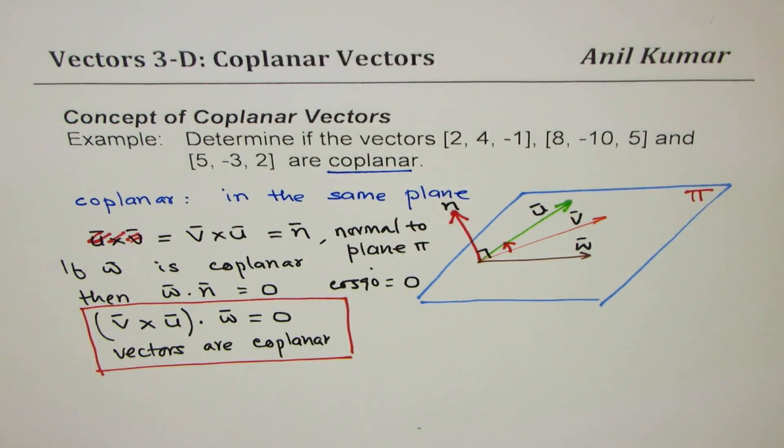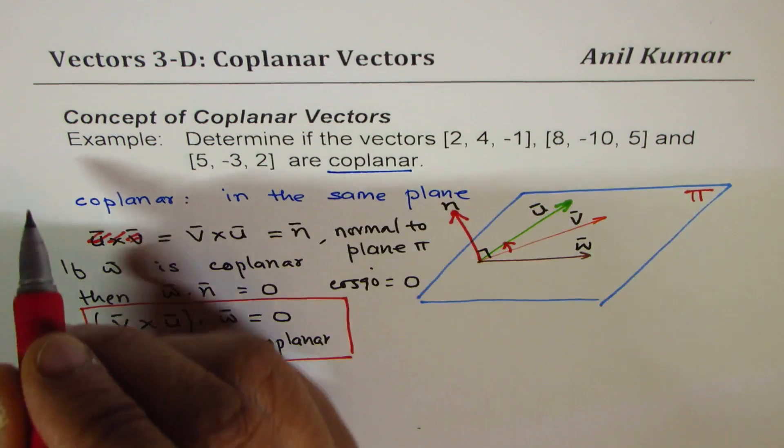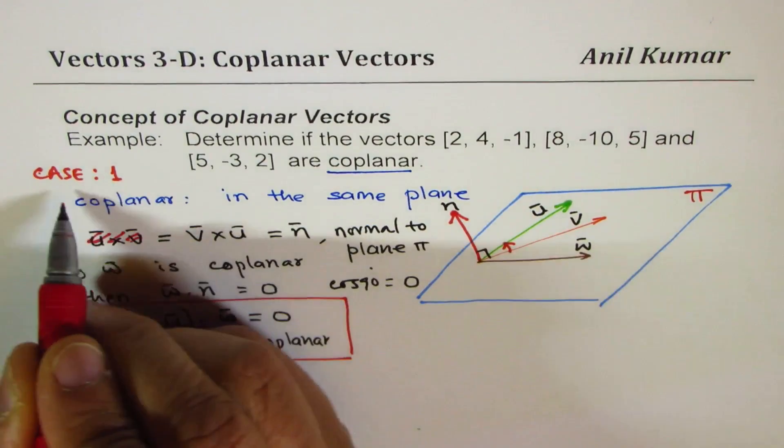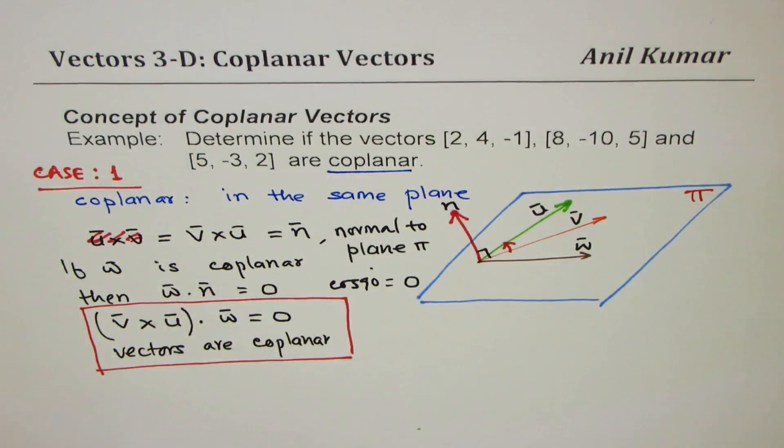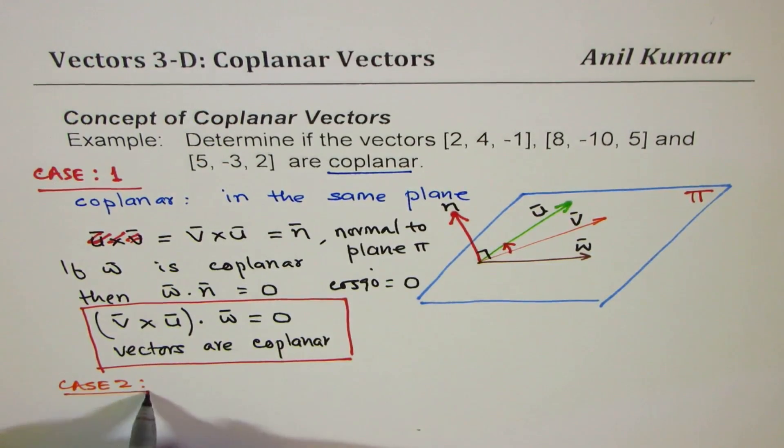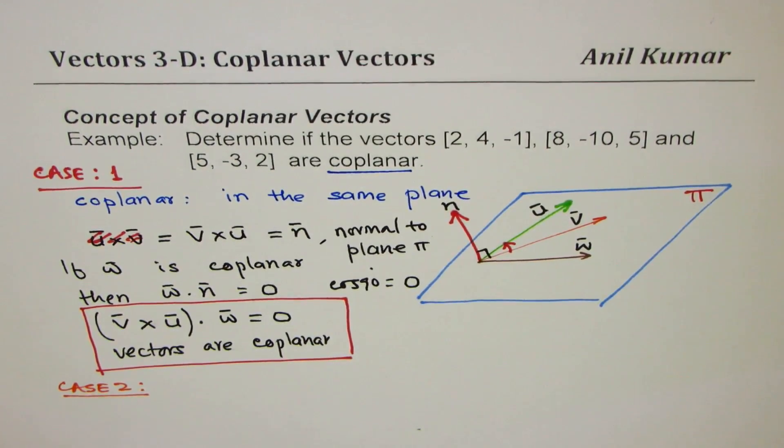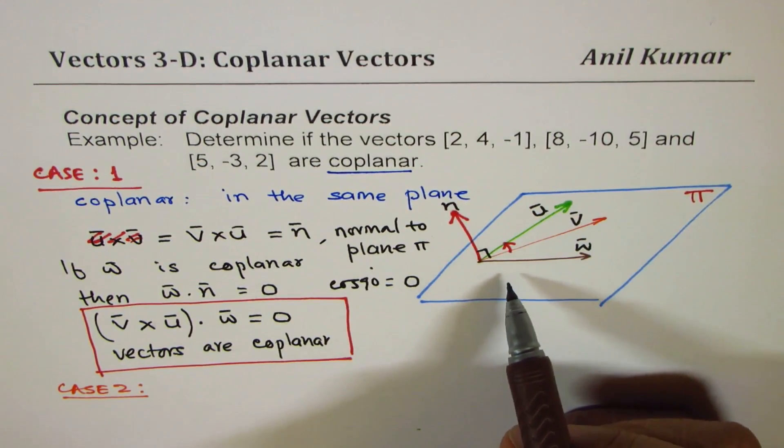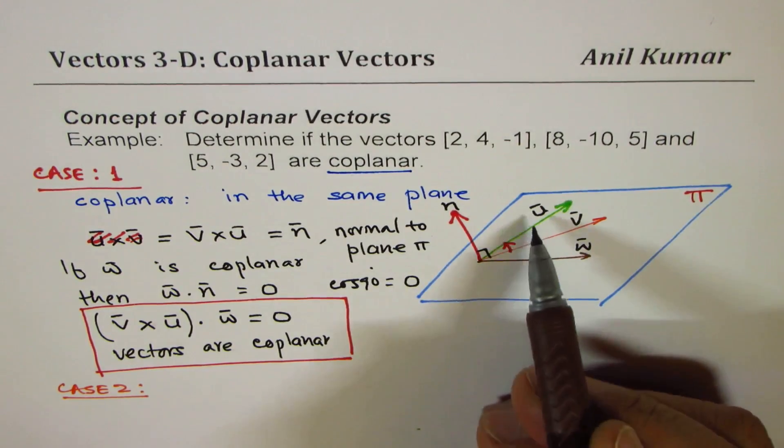That becomes a condition for any three vectors to be coplanar. So I will call this as one way of doing it. Let me say this is case 1. Case 2, which I will also discuss in this particular video.